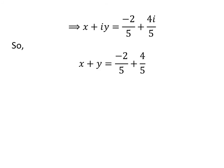Comparison of like terms of the left-hand side gives us x is equal to minus 2 upon 5, and y is equal to 4 upon 5. Thus, x plus y is equal to minus 2 upon 5 plus 4 upon 5. Since 5 is the common denominator, x plus y is equal to minus 2 plus 4 upon 5.